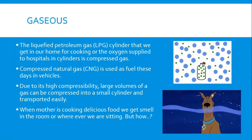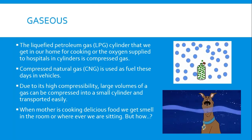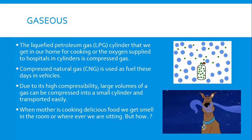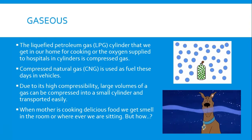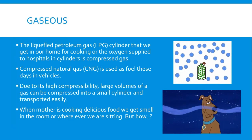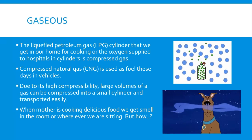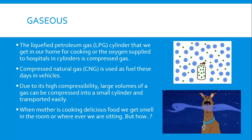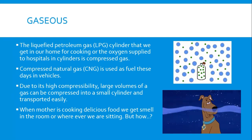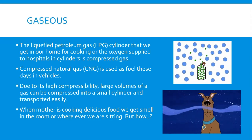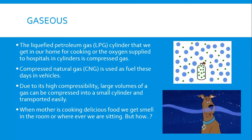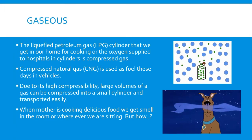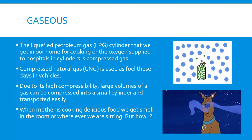The third state is gaseous — there is very much space between the particles of a gas, as seen in the image. Examples include liquefied petroleum gas (LPG) used at home for cooking, oxygen supplied in hospital cylinders, and CNG used as fuel in vehicles. Because there is so much space between gas particles, gas can be compressed into large volumes within a small space — a small cylinder can hold lots of gas and be transported easily.